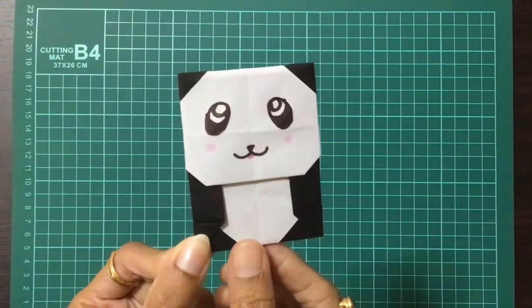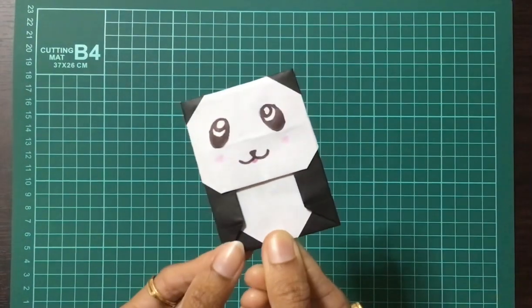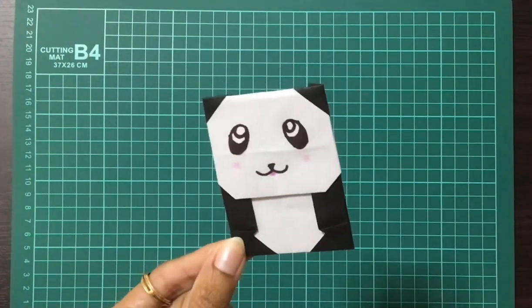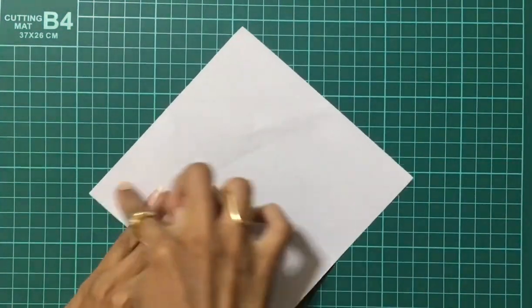Hi, welcome to Origami Ocean. Today we'll be making an origami panda. I have used a single paper to create this model. I'll be taking a 15 centimeter by 15 centimeter square sheet of paper and keeping the white side on the top.